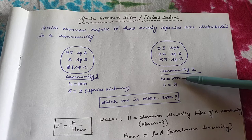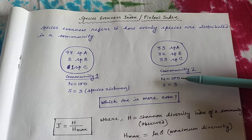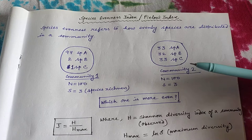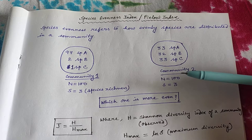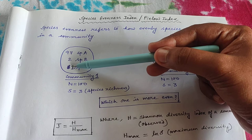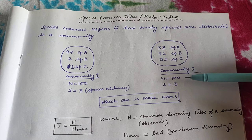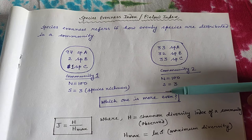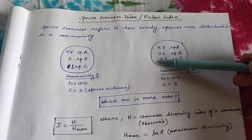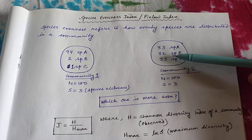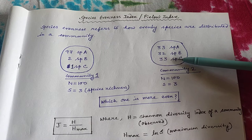Now, given the individual number of each species in each community, which community is more even? Species richness is the same, but which one is more even? In community 1, species A has 97 individuals, B has 2, and C has 1. In community 2, species A and C each have 33 individuals and B has 32. Without any complicated calculations, we can easily say that community 2 is more even because the variation in numbers is very small — 33, 32, 33 — meaning the three species are very evenly distributed and none of them are dominant.